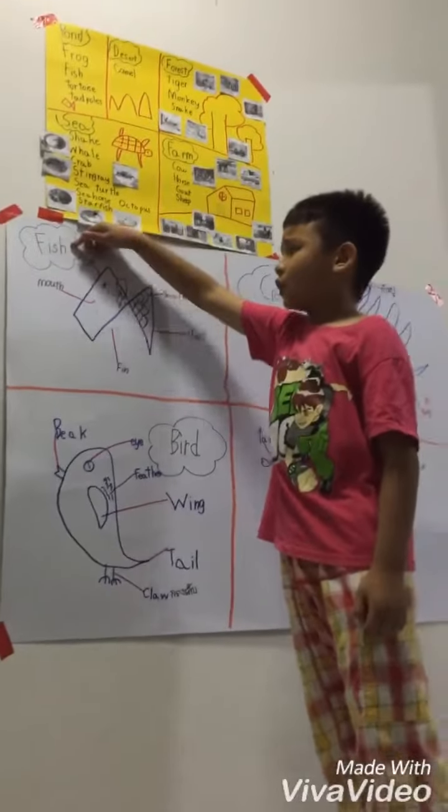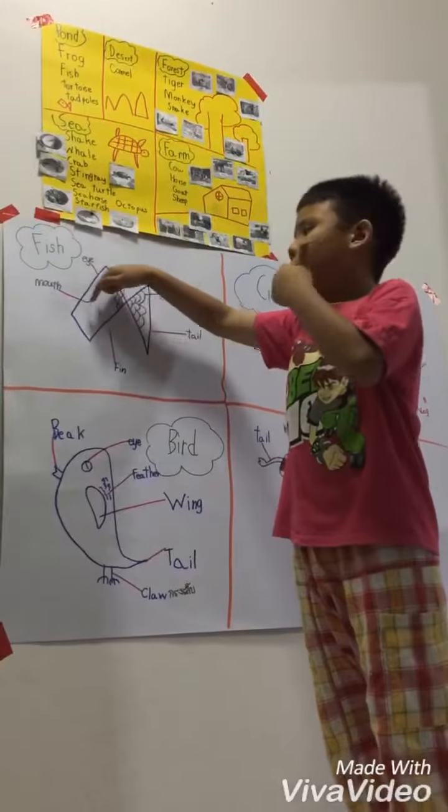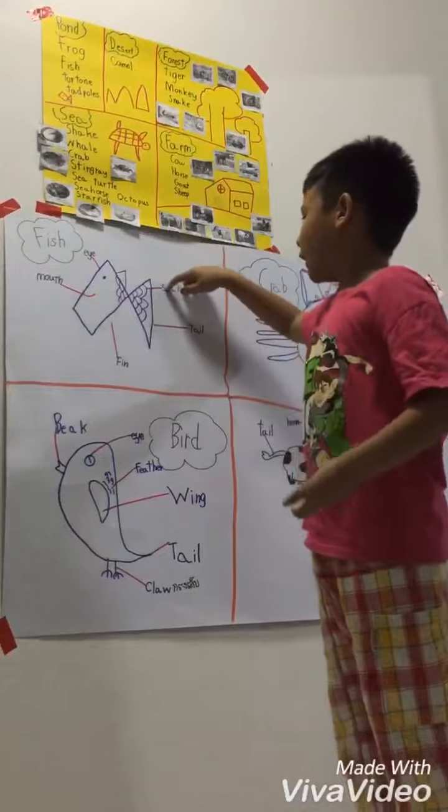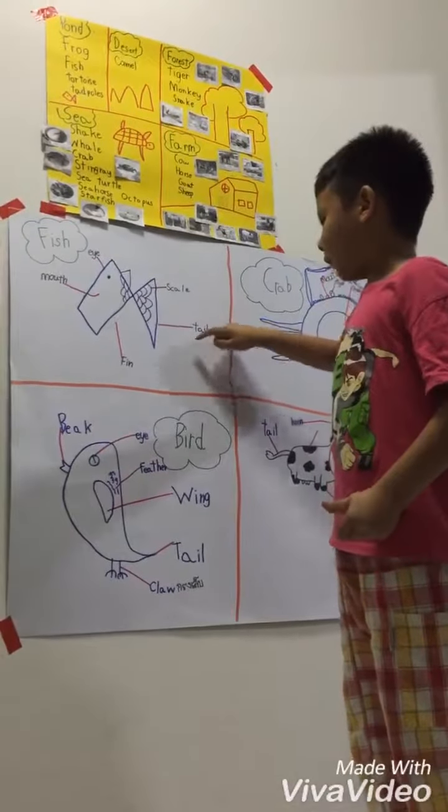Number one, fish. Have an eye. Mouth. Scale. Tail. Fin.